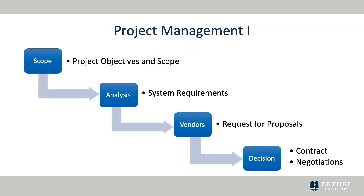The process of acquiring and implementing a new system follows a project management sequence. A committee will be established to review the project objectives and the scope of the project. System goals should be established, and the committee then moves into defining the system requirements. What items must the new system have versus what might someone want the system to have comprise the system requirements. This is where scope creep can become a problem.